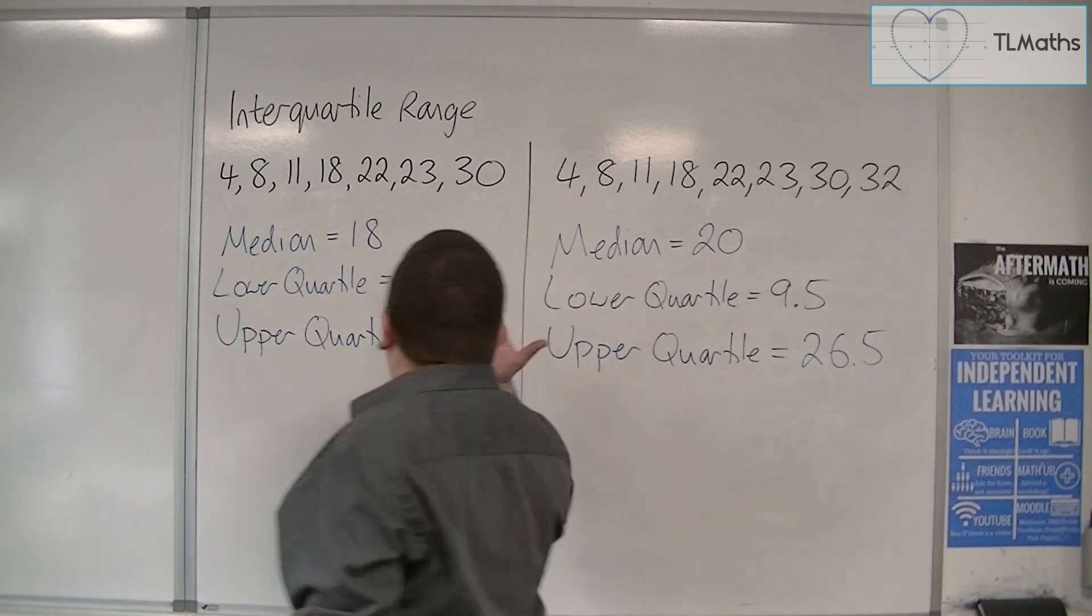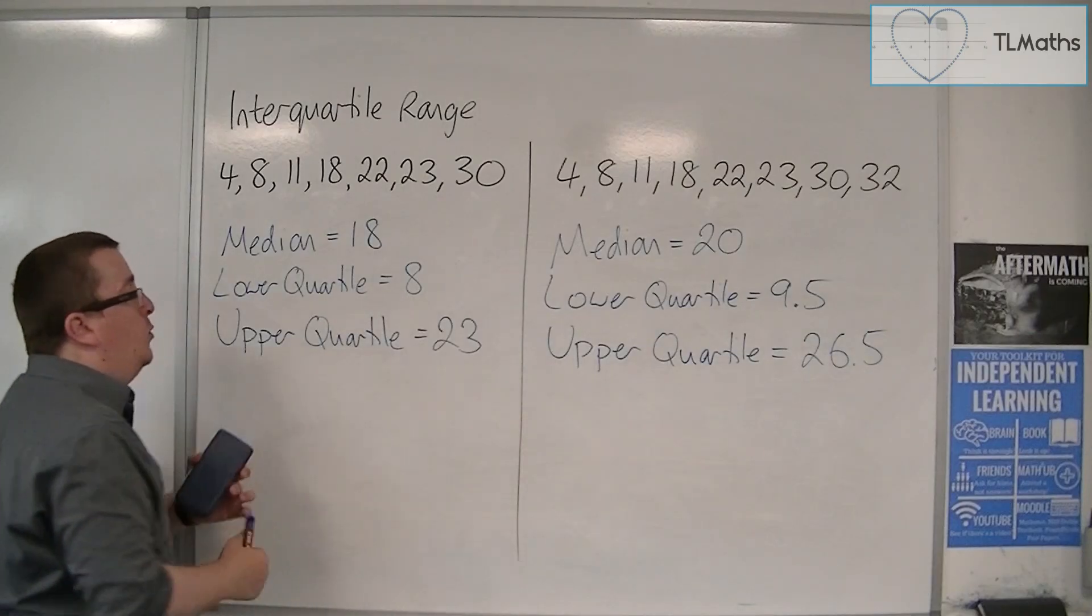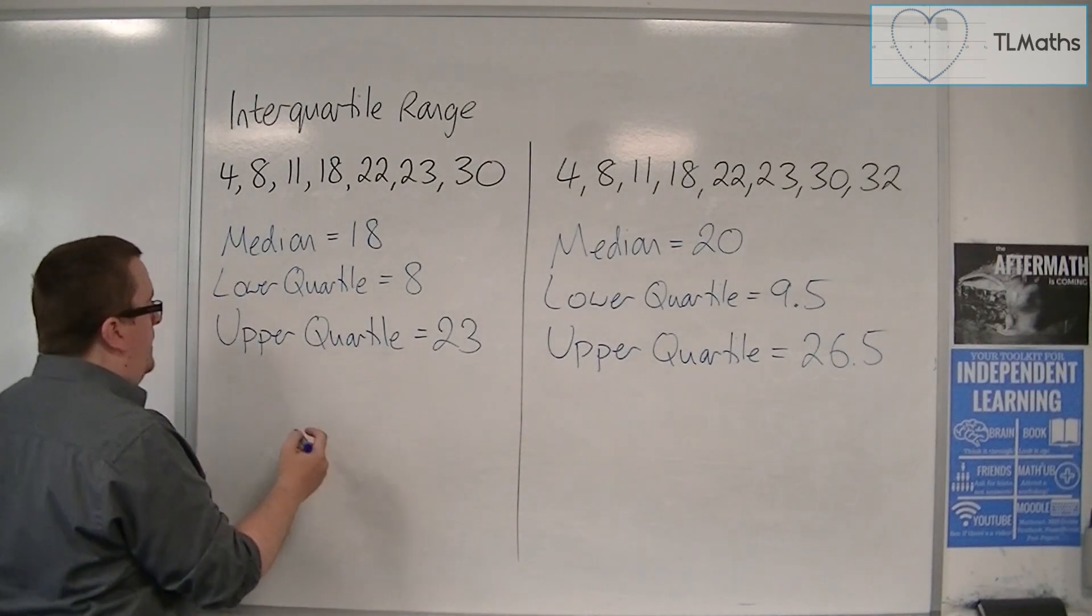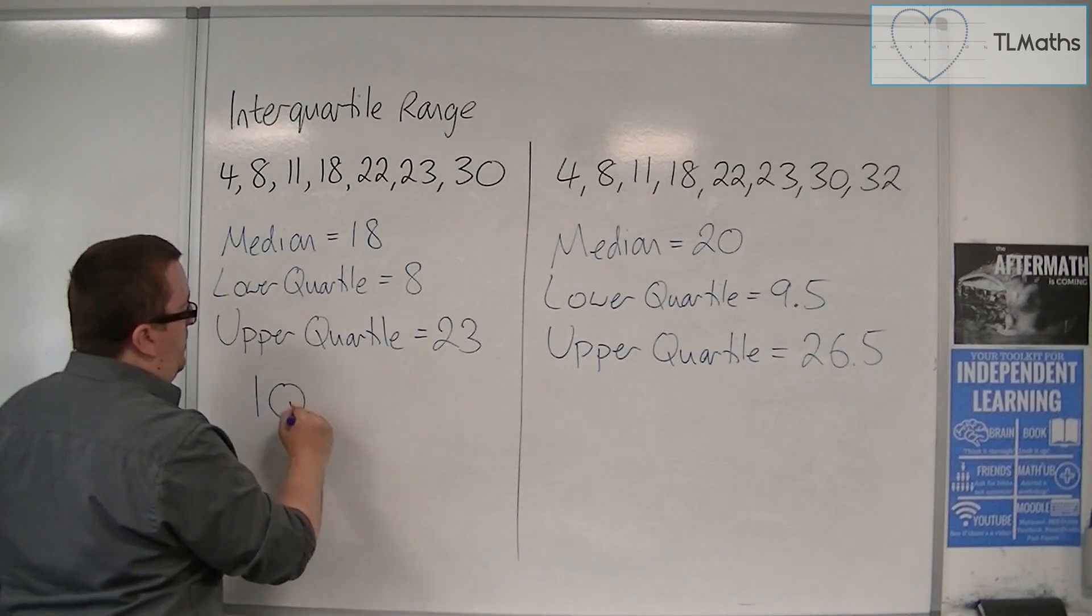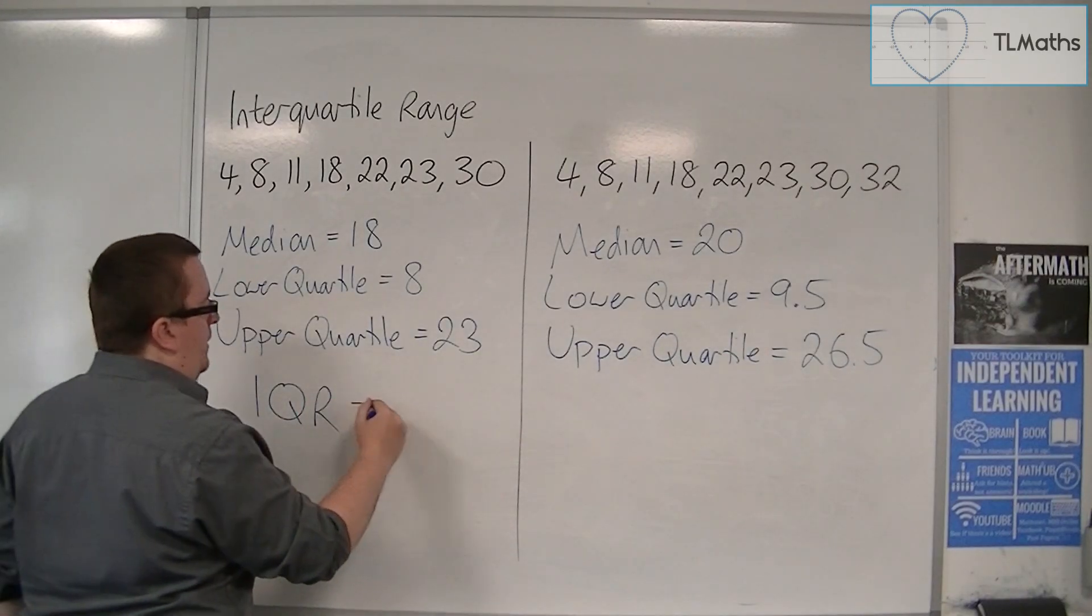So we have 23 take away 8, which is 15. The interquartile range is sometimes abbreviated to IQR.